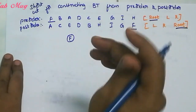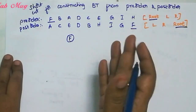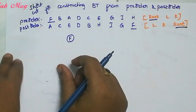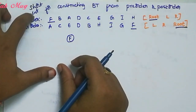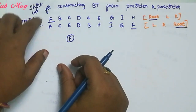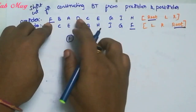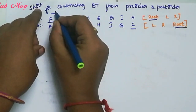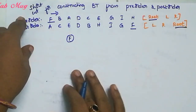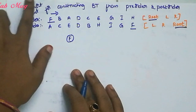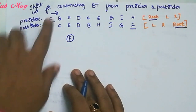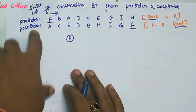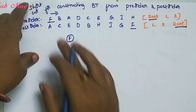Now the shortcut logic changes from here. Concentrate on pre-order - manam pre-order lo each and every element ni left to right ga travel chesthu valtham. Pre-order eppudu kuda left to right avutundi, so aa elements ni manam post-order lo check cheskoali. That is the shortcut logic.